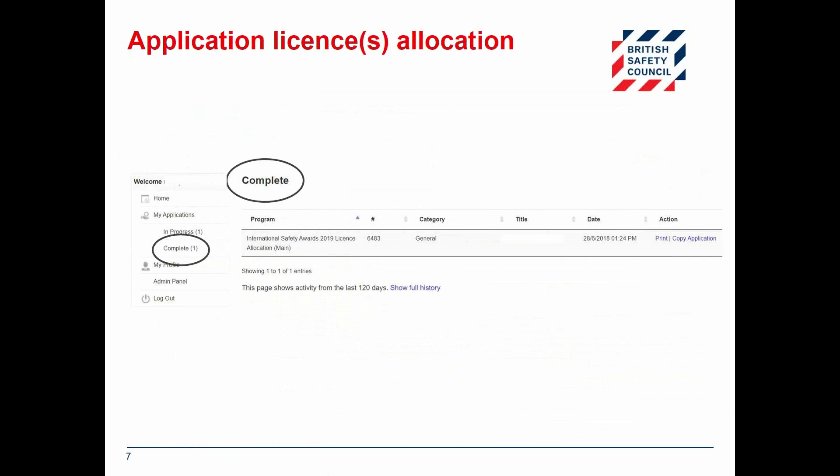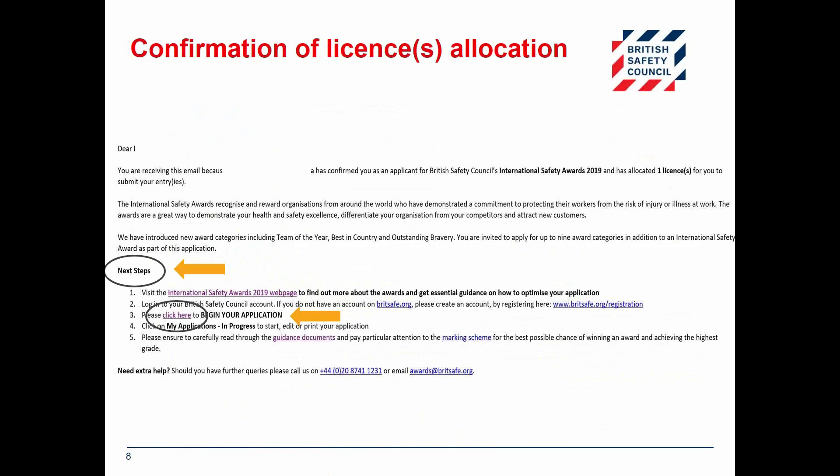To see the number of licenses you have allocated, look at the completed tab on the left hand side of the home page. Please note that 'complete' refers to the license allocation and not the status of the application itself. When you allocate a license, the person it is allocated to will receive a confirmation email with the number of licenses assigned and instructions on how to begin the application process, as well as links to the supporting materials.